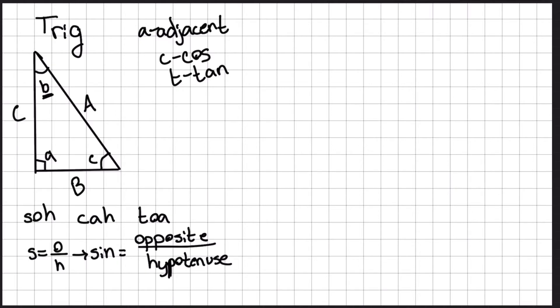Alright, let's do this with respect to little b. We're going to find the sine, cosine, and tangent of little b. To start, the hypotenuse of this triangle is going to be A, because that is the longest side of this triangle.